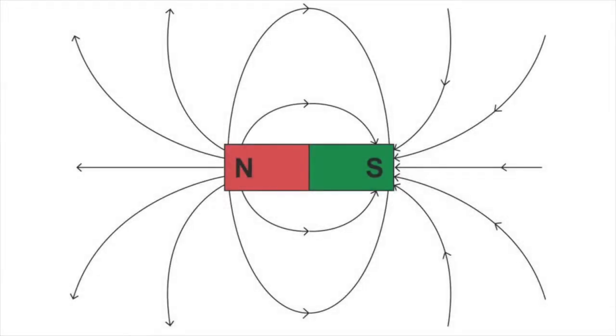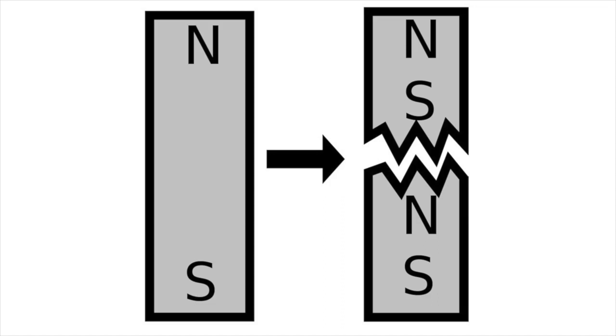Every magnet has a north pole and a south pole. If you break a magnet in half, the poles don't separate. You just end up with two smaller dipole magnets.